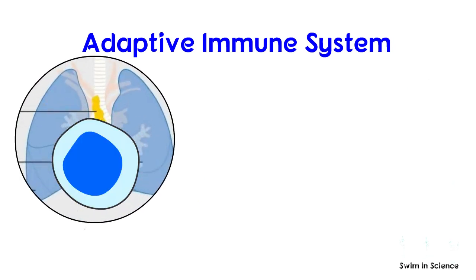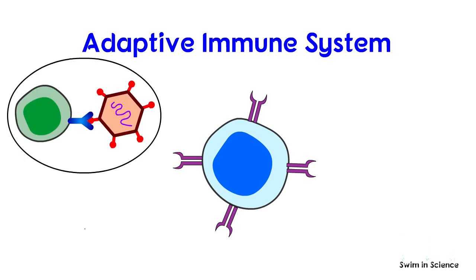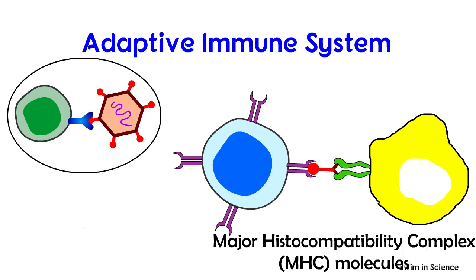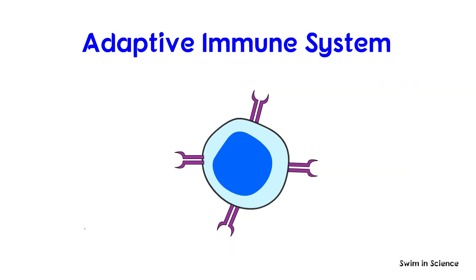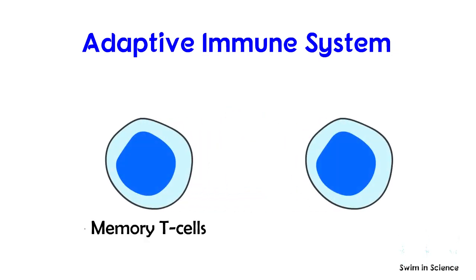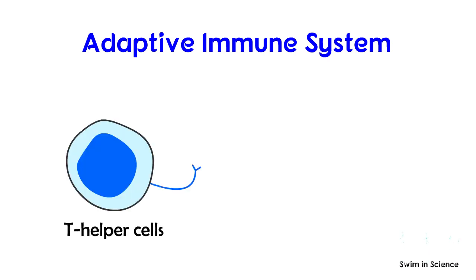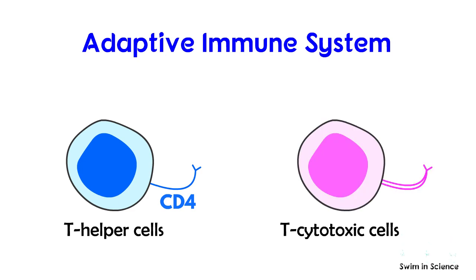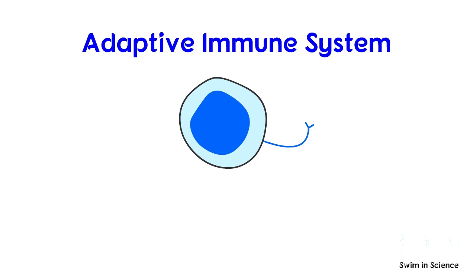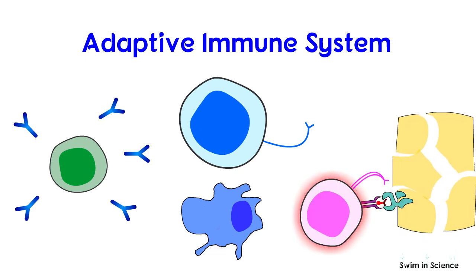T lymphocytes mature in the thymus gland and are therefore called T cells. During maturation, they express T cell receptors. Unlike B cell receptors (antibodies), which bind to antigens alone, T cell receptors only bind to antigens that are bound to cell membrane proteins called major histocompatibility complex (MHC) molecules, which take part in a process called antigen presentation. Similar to B cells, when a naive T cell encounters an antigen combined with an MHC molecule, the T cell proliferates and differentiates into memory T cells and various effector T cells. T cells have subpopulations called T helper cells, which have CD4 glycoproteins on their surface, and T cytotoxic cells, which have CD8 glycoproteins on their surface. T helper cells help activate B cells to secrete antibodies, macrophages to destroy ingested microbes, and cytotoxic T cells to kill infected target cells.